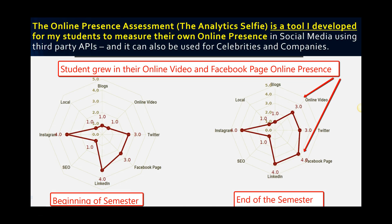In the social media for the arts course, students measure their own presence using public APIs to look at eight different social media channels. A student assesses their own presence at the beginning of the semester, and then we look again four months later at the end of the semester. In this case, the student grew in their Facebook page and YouTube — and they can measure that not by their opinion, but by actual metrics pulled from the third party platform. I call this the analytic selfie.